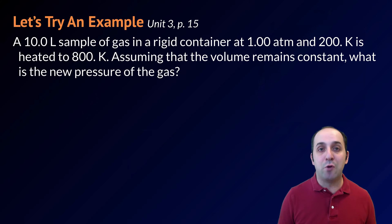Let's look at an example of Gay-Lussac's law from our packet. This is on page 15. A 10-liter sample of a gas in a rigid container at 1 atmosphere and 200 degrees Kelvin is heated to 800 degrees Kelvin. Assuming that the volume remains constant, what is the new pressure of the gas? Pause the video, take a moment and see if you can solve this on your own. And then when you're ready, let's go through the solution together.